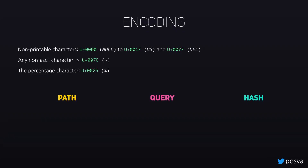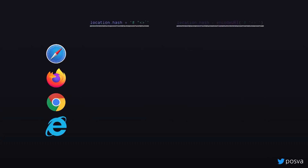There are other rules specific to every section of the URL. The hash is the simplest: you have to encode the space, a quote, less-than, greater-than, and the backtick. For the path, you also need to encode all those characters, plus the hash, the question mark, and curly braces — because the hash and question mark delimit the search and hash sections. The query is very similar to hash, except you replace the backtick with a hash. And if you want to use the ampersand and equal symbols inside the keys or values, you need to encode them.